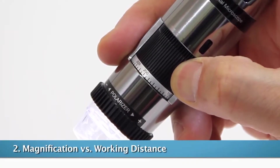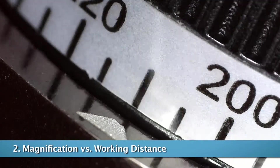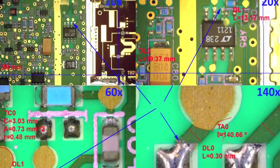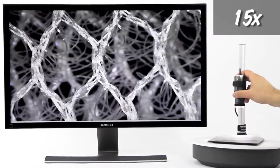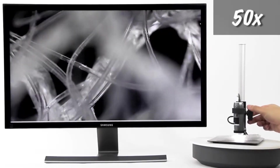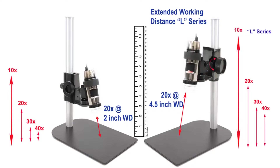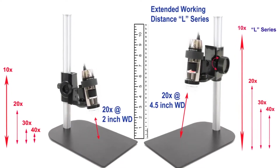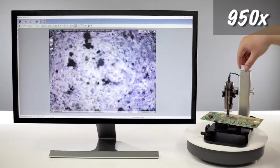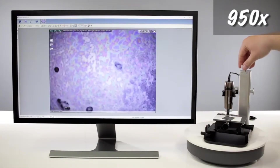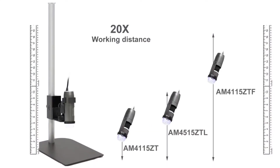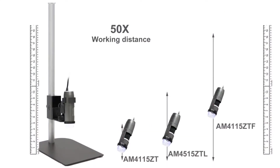DynaLite microscopes focus at a set distance per magnification. The distance between the DynaLite and the object being viewed is known as the working distance. Our standard working distance models will always focus much closer to the viewing object than longer working distance models. If you require a certain distance between the scope and the object, whether due to required scope placement or space to work under, then we recommend a long working distance model.